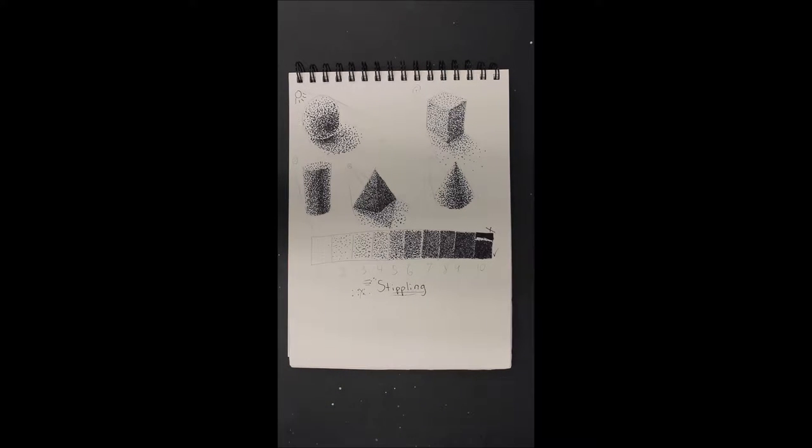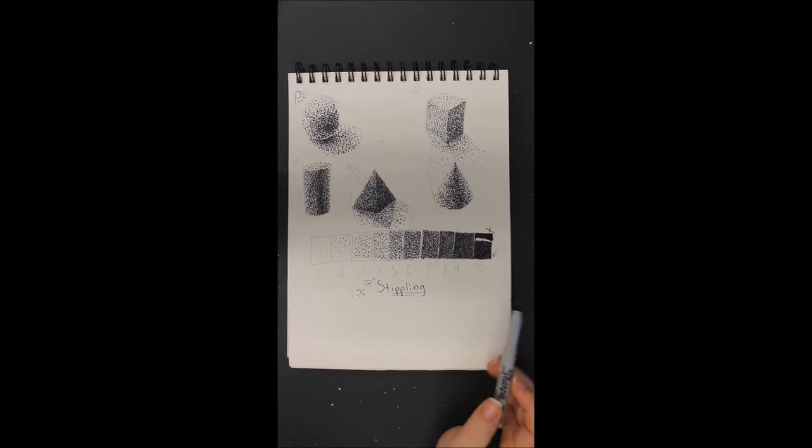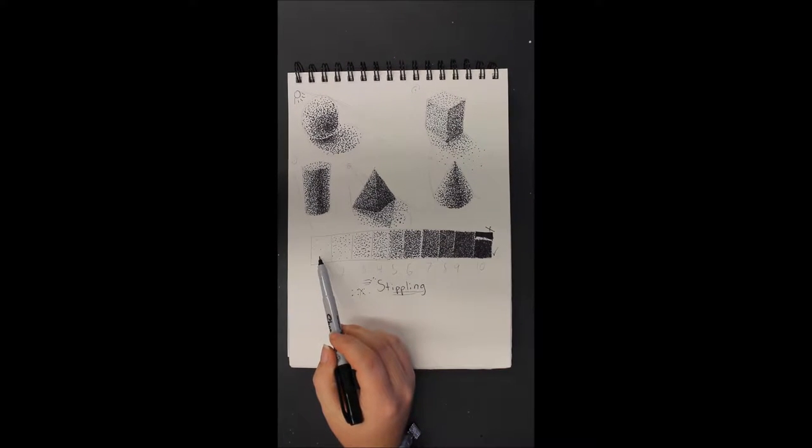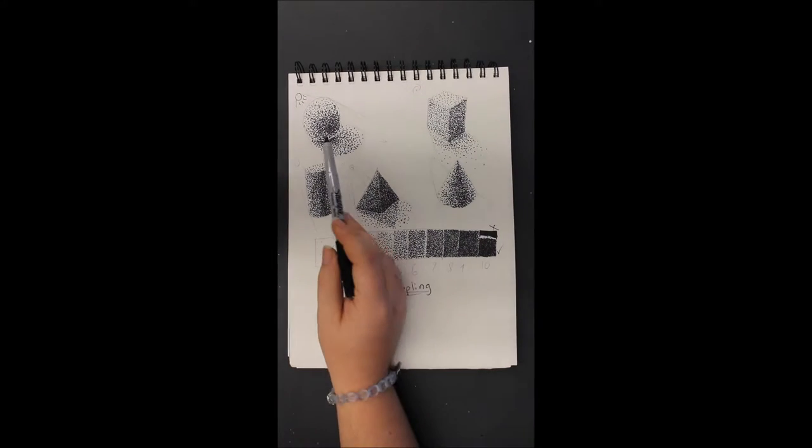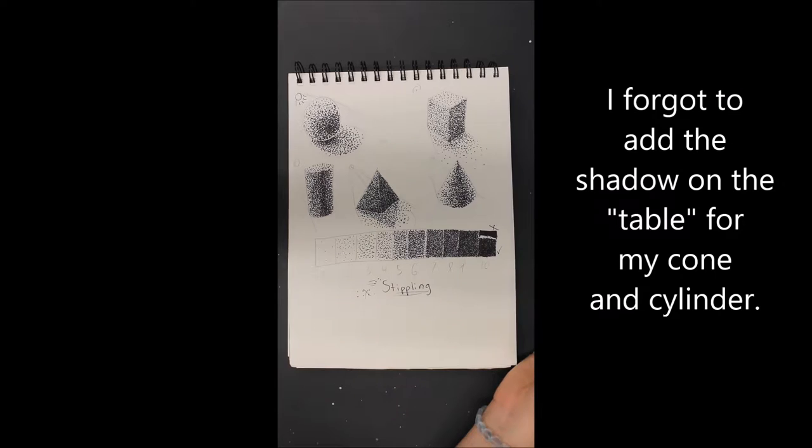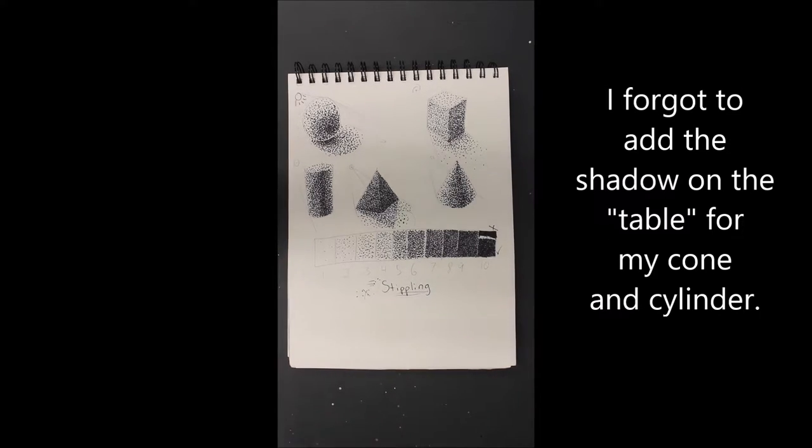Alright, so last time we finished stippling in our sketchbooks. You should have your value scale from 1 to 10 and then your five objects shaded accurately. One thing that I would like to show you in just a moment is the fact that I don't have any outlines.